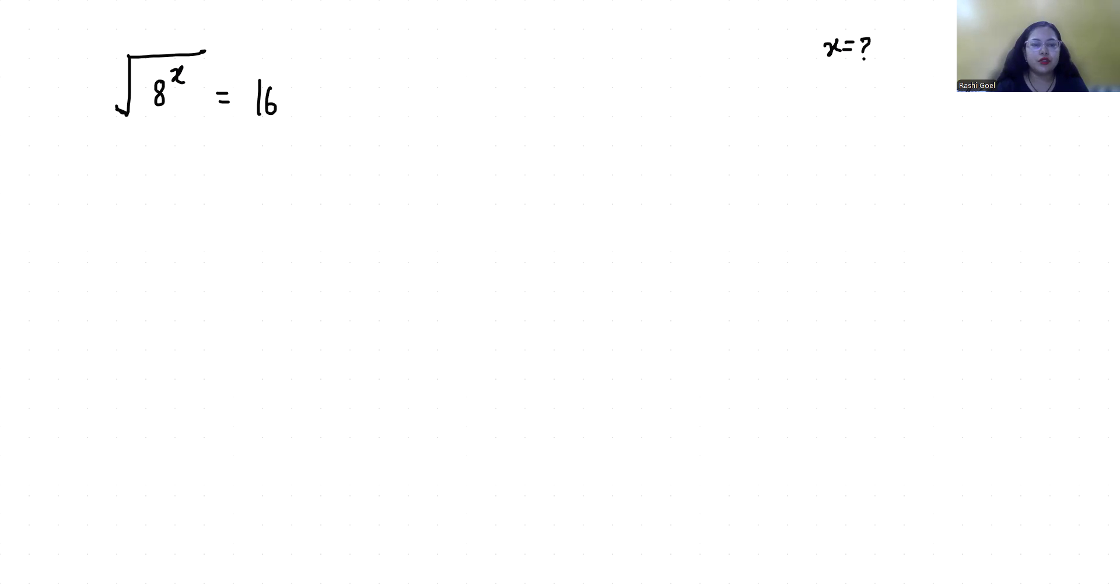Let's start with today's video solution. So under square root, 8 power x equals 16. I am squaring both sides. With the help of this square, the square root removes, so 8 power x equals 16 square.